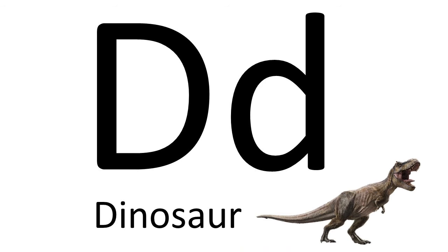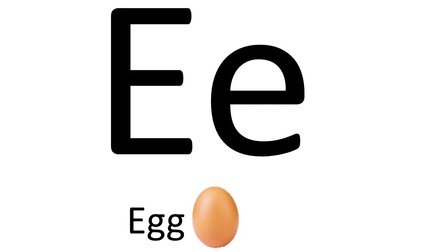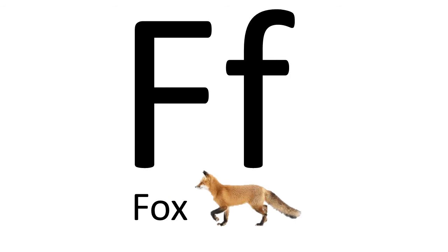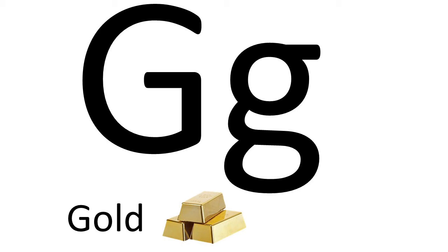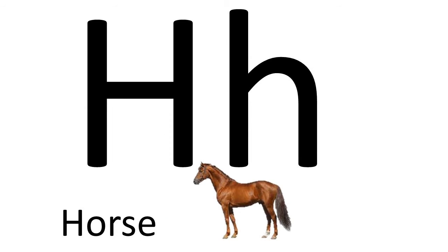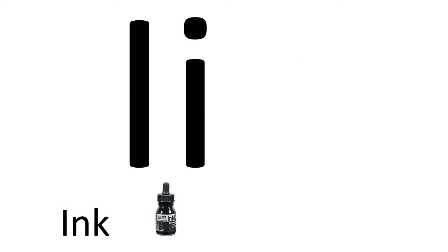Alphabet D, sound 'd', example: dinosaur. D, d, dinosaur. Alphabet E, sound 'e', example: egg. E, e, egg. Alphabet F, sound 'f', example: fox. F, f, fox. Alphabet G, sound 'gu', example: gold. Gu, gu, gold. Alphabet H, sound 'h', example: horse. H, h, horse. Alphabet I, sound 'i', example: ink. I, i, ink.